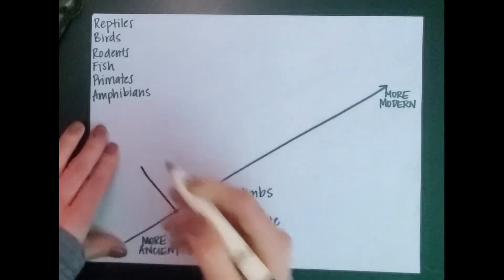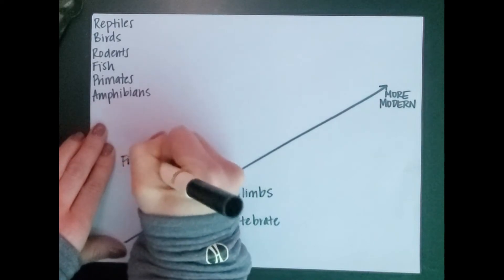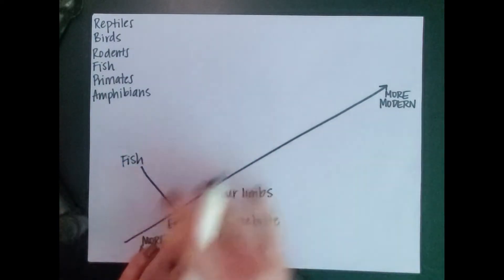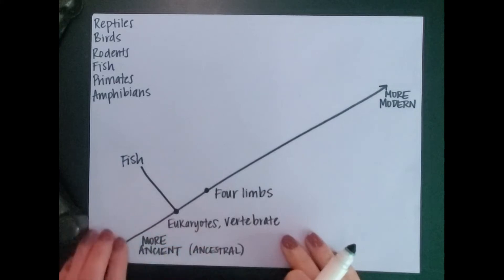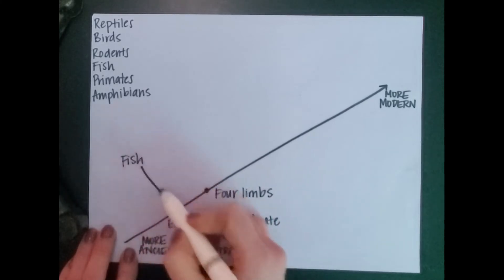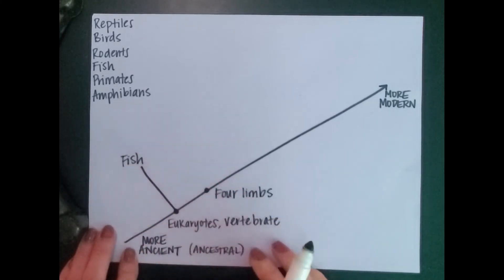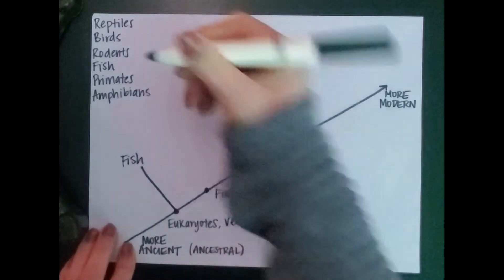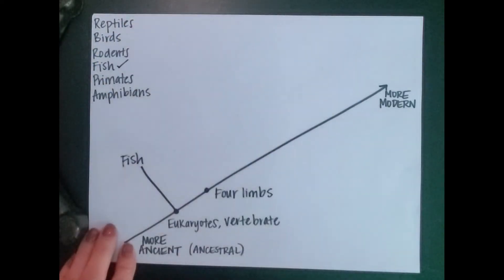Because that's going to separate fish from the rest of our timeline. So now I have fish there, eukaryotes and vertebrates, but they don't have four limbs because they've diverged from our timeline before four limbs. So now I've got fish checked off my list.